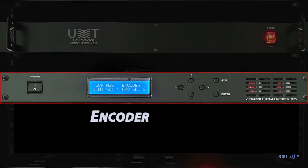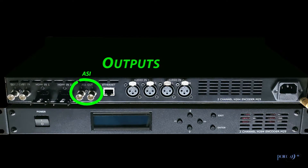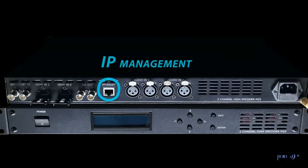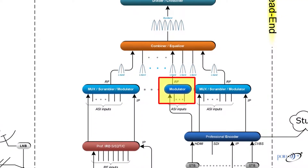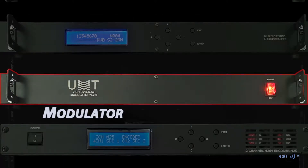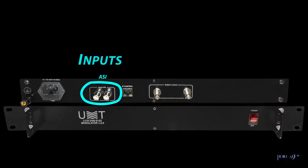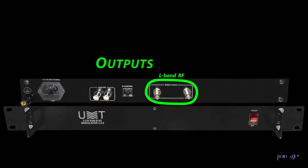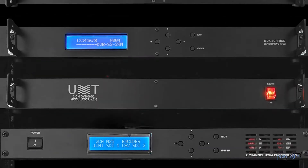Number 2: Encoders. Encoders have analog and digital video and audio inputs, support different encoding standards, and have ASI and IP outputs with IP management. Number 3: Modulators. Modulators have ASI inputs for transport streams and RF outputs with IP management. This example is a 2-channel modulator.